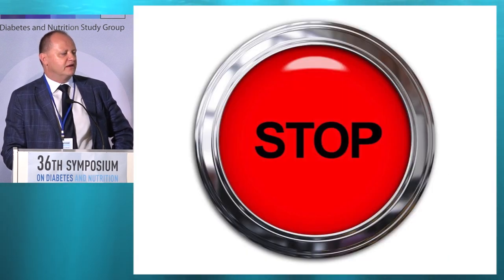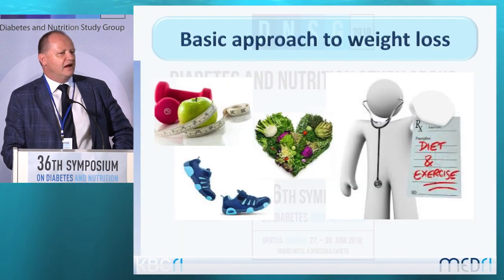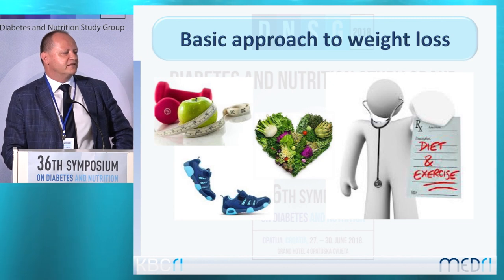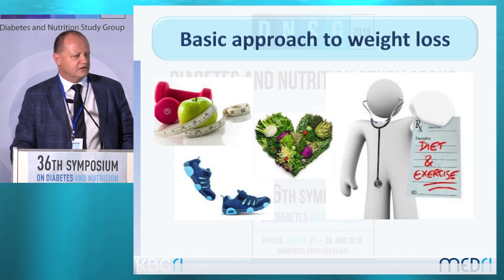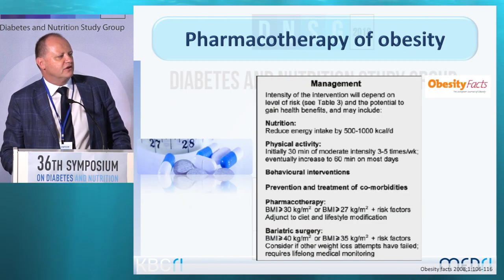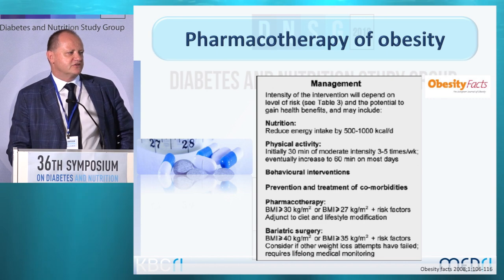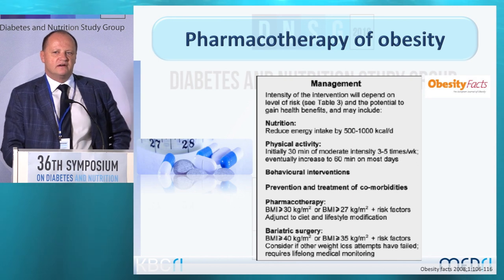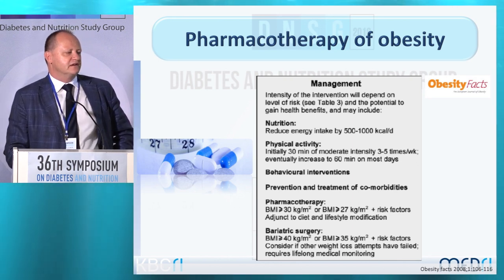So what can we do? How can we stop this fatal triangle? The answers are relatively simple, but very difficult in practice. The main solutions are diet and exercise. We need to reduce energy intake and increase physical activity, with daily physical activity for all people.